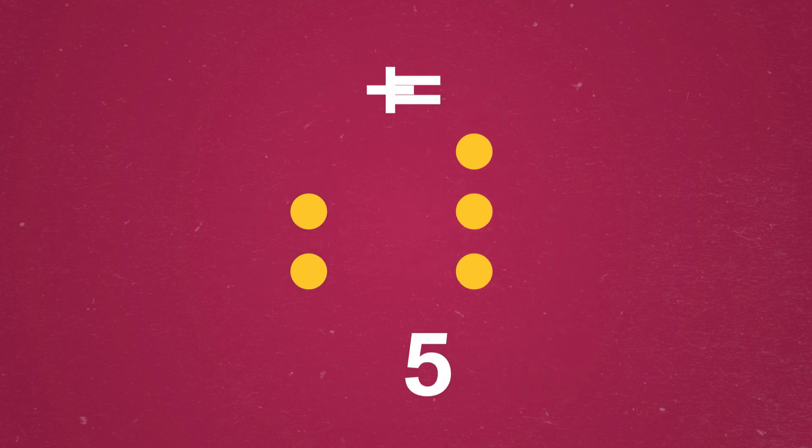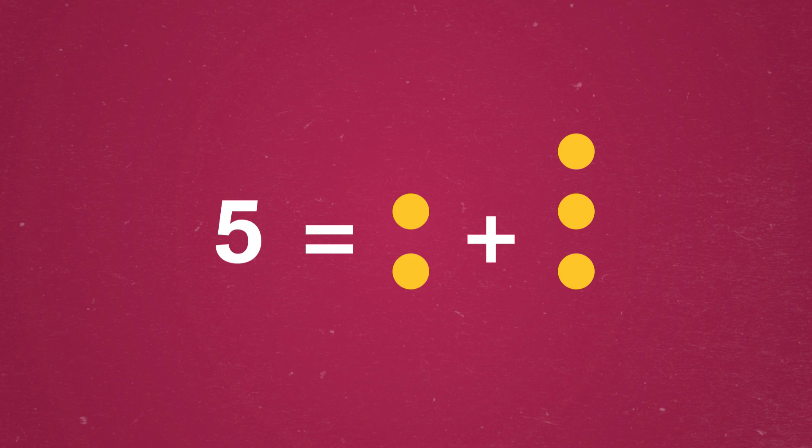But if we read the picture from right to left, like we're reading Arabic or Hebrew, we'd see 3 plus 2. Of course, the five dots stayed the same, so 3 plus 2 also equals 5.